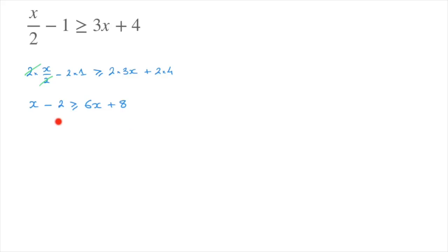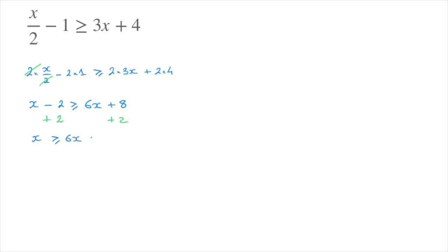I gather all the terms without an x on the right-hand side. Looking at the left-hand side, this 2 is being subtracted, so to get rid of it I add 2 to both sides. That leads us to x minus 2 plus 2, which is x, greater than or equal to 6x plus 8 plus 2, so that's plus 10.